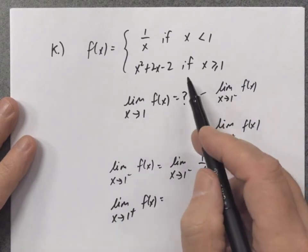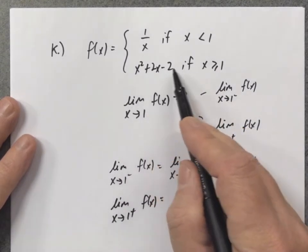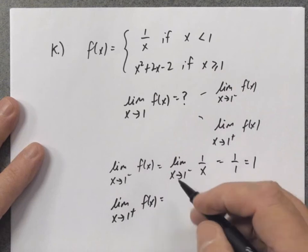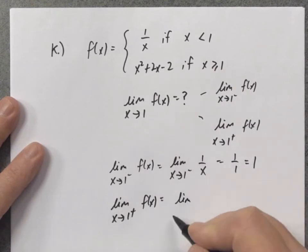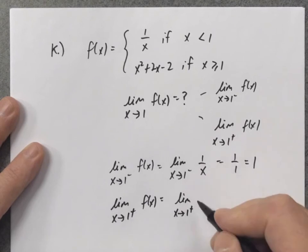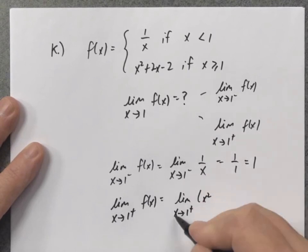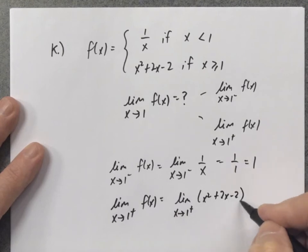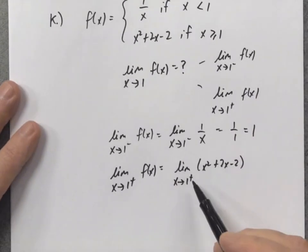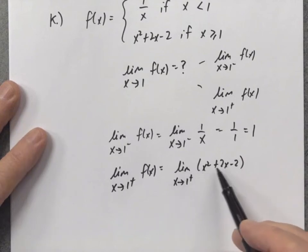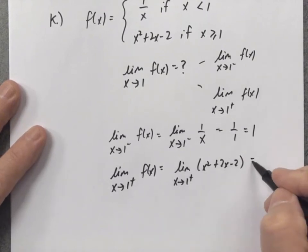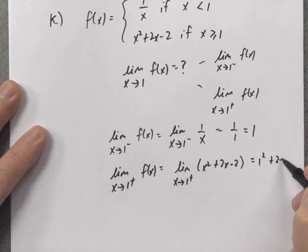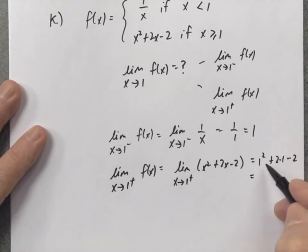Now let's look at the limit as x approaches 1 from the high side. Because x is a little larger than 1, we use the second function. So we have the limit as x approaches 1 from the high side of x squared plus 2x minus 2. I plug in 1 for x: 1 squared plus 2 times 1 minus 2 equals 1 plus 2 minus 2, which is 1.